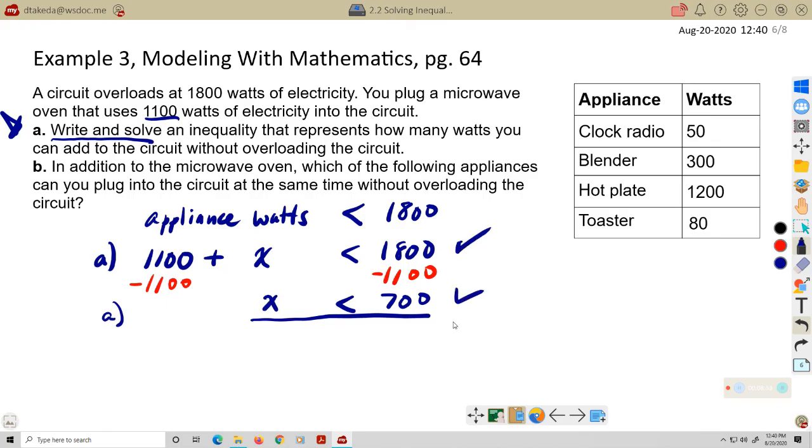So now, question B says, in addition to the microwave oven, which of the following appliances can you plug into the circuit at the same time without overloading the circuit? Well, clock radio is 50, the blender is 300, the toaster is 80, the hot plate, though, is 1,200. So anything but the hot plate is the answer to this. And actually, any combination of those three would still work. They would still come in under 700. Right, so that's example three.